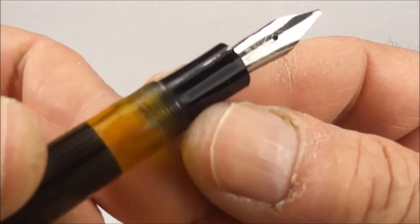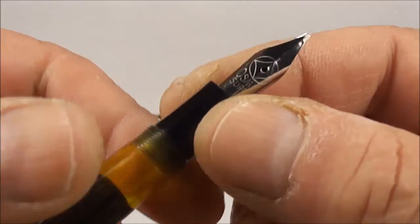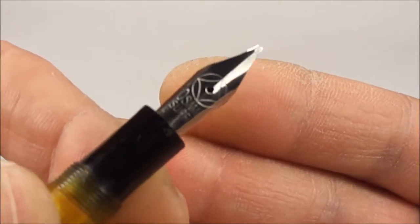You can see this particular model has the sort of the greenish ink view window there. Now if we show you the top there you can see the section is a quite a smooth section and then if we show you the nib.